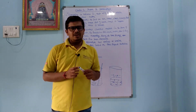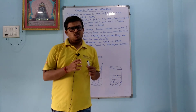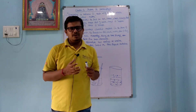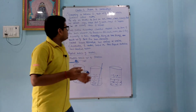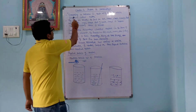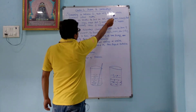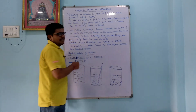We know only 4 to 8 percent of matter, which is visible because of light. Everything in the universe is made up of material which scientists call matter.